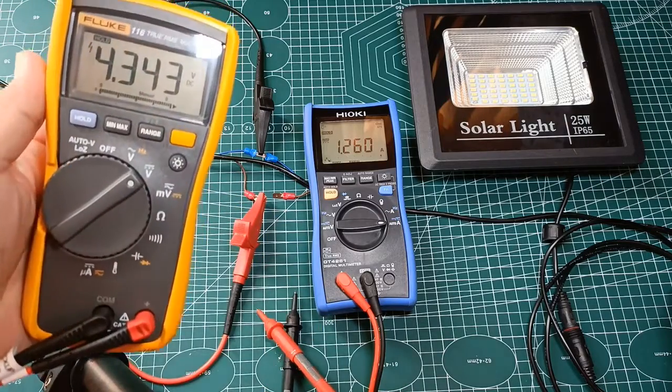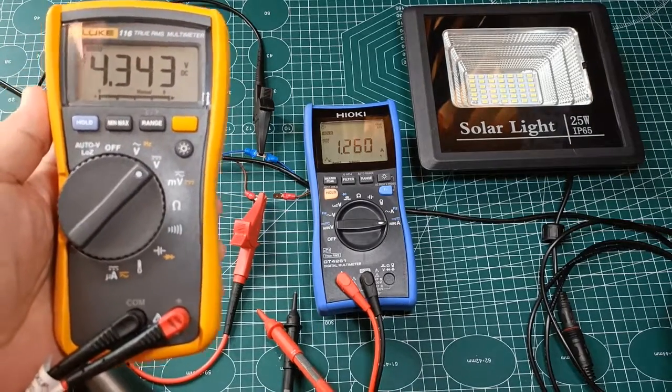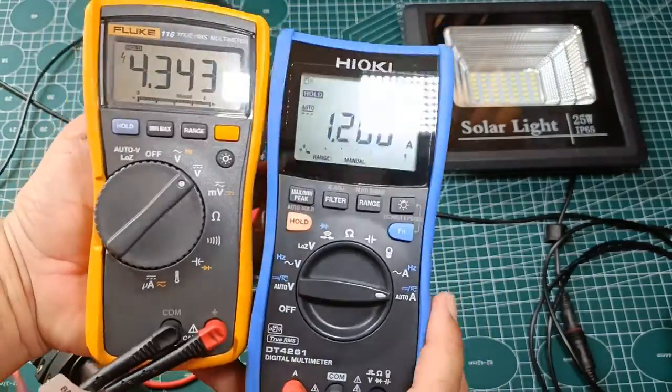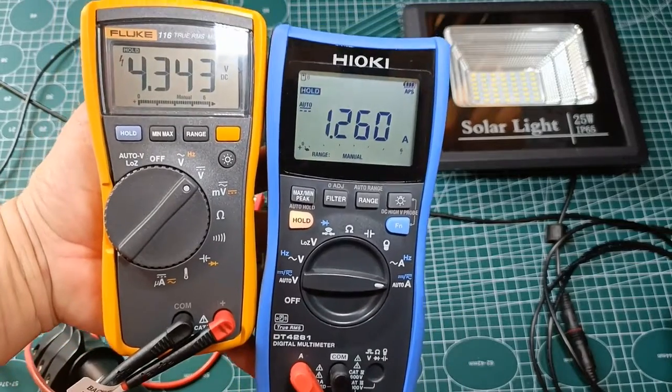So that's the charging voltage of 4.3 volts DC and the charging current of 1.26 amperes DC at this very moment.